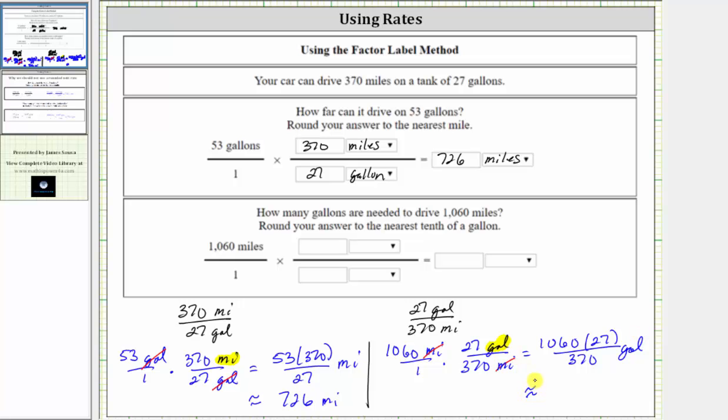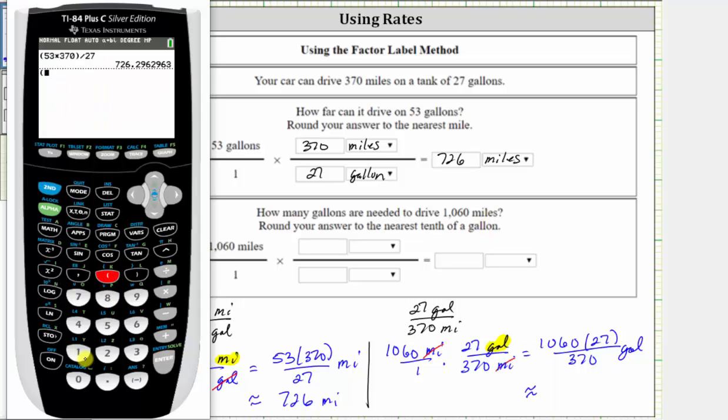And we're told to round to the nearest tenth of a gallon. So going back to the calculator, we have open parenthesis, 1,060 times 27, close parenthesis, divided by 370, enter. Round to the tenths place value. Because we have a five in the hundredths place value, we round up to 77.4 gallons.